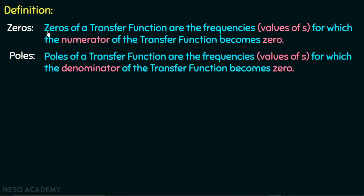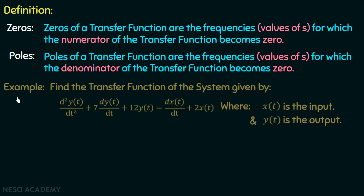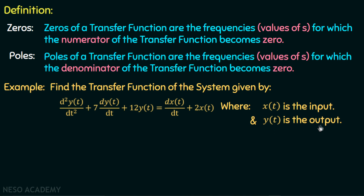We will take one example to understand zeros and poles in a better manner. The example is: find the transfer function of the system given by this differential equation, where x(t) is the input and y(t) is the output. We have calculated the transfer functions of many such systems in previous lectures, and we know that the transfer function is the Laplace transform of the output to the Laplace transform of the input, keeping all initial conditions equal to zero.